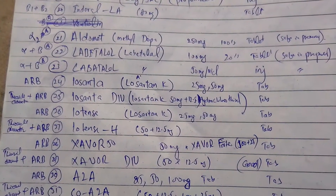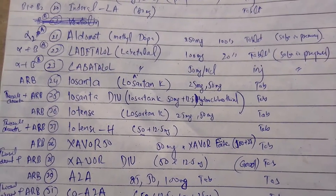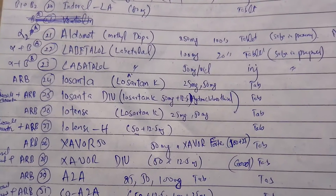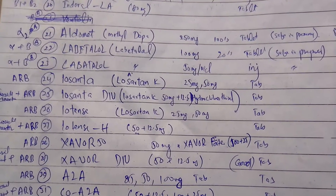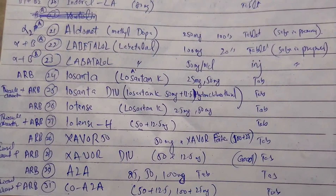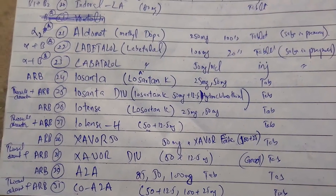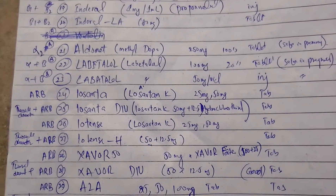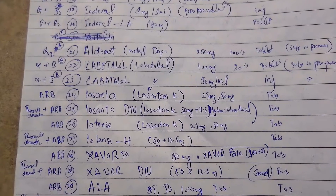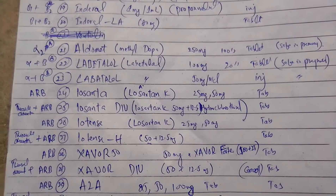Another drug is Low Center, available in 25 mg and 50 mg tablet strengths. The generic name is losartan potassium. Losartan potassium belongs to the ARBs — angiotensin receptor blocker drugs.